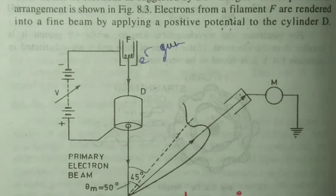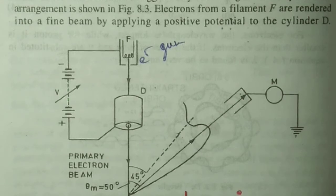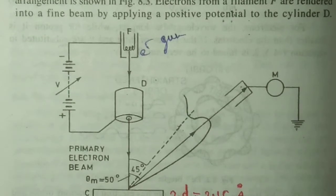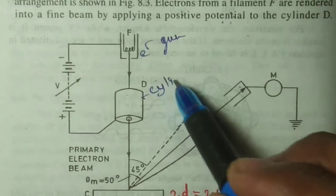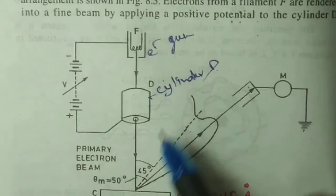They are then directed into a fine beam by applying a positive potential to the cylinder. This is known as cylinder D.